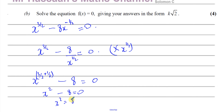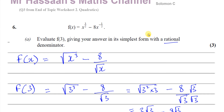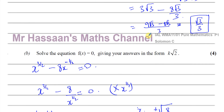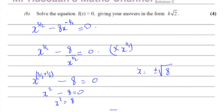So x squared equals eight, therefore x equals plus or minus the square root of eight. The question asks for answers in the form k root two, so we take out the perfect square: the square root of eight is the square root of four times the square root of two, giving x equals plus or minus two root two.